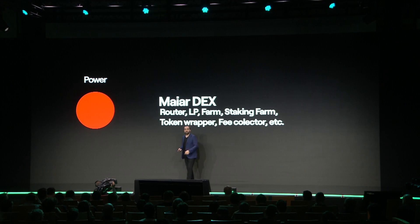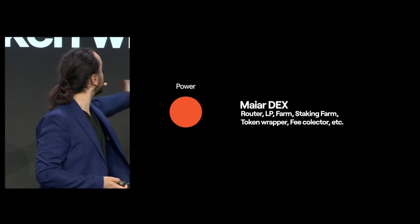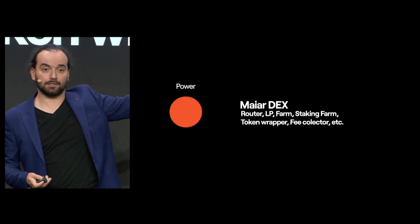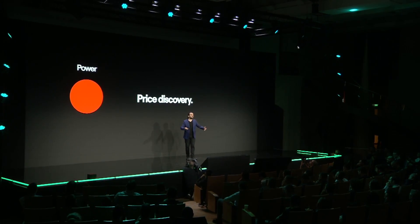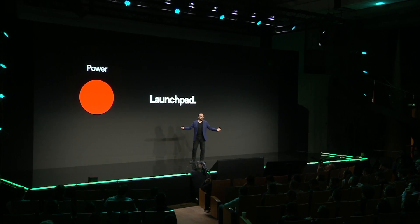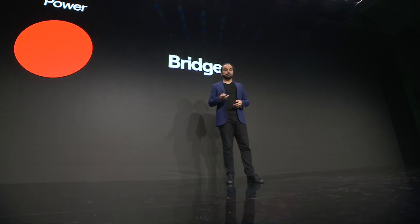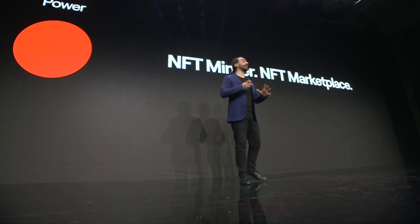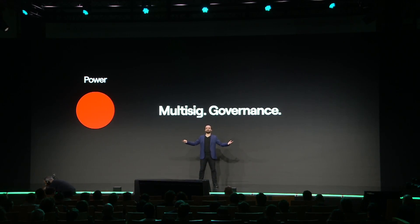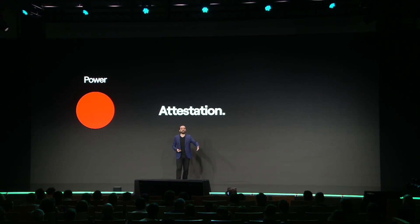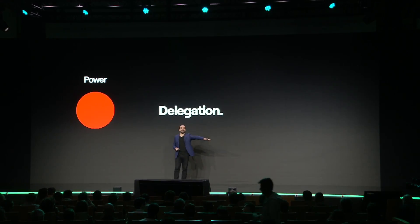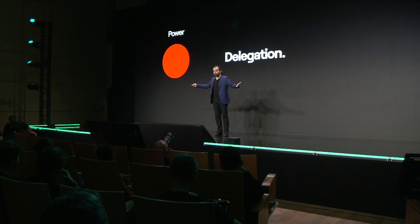Without further ado, we have Mardex with many contracts built into it — farms, LPs, and so on. We have Metabonding contracts, a price discovery contract very important for launches, the Launchpad used by so many users, bridges to all these other blockchains, a very powerful NFT minter, and a very powerful NFT marketplace. The multisig and governance are the building blocks of DAOs and organizations. We have oracles functioning right now on the testnet, and we have the DNS which handles your hero tags. We also have attestation and delegation — and this is just to name a few, with many more being built.